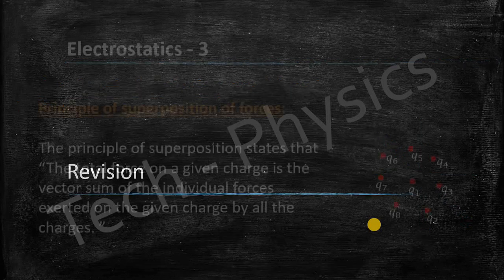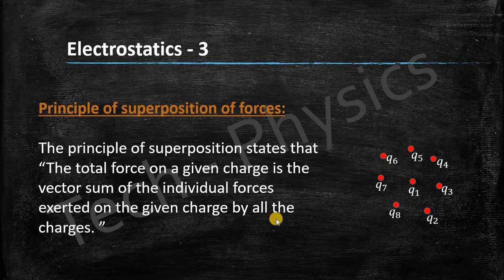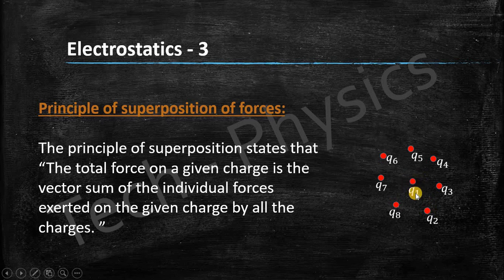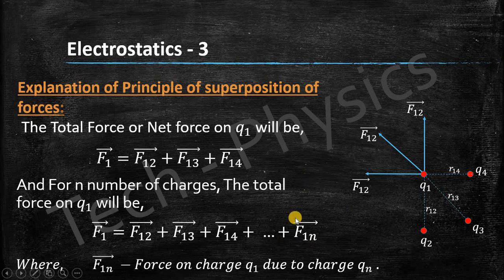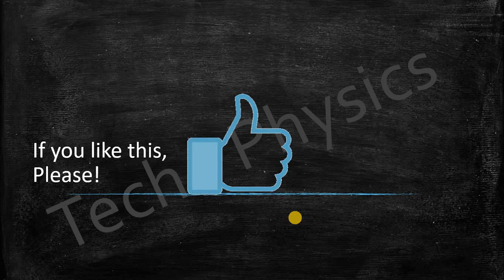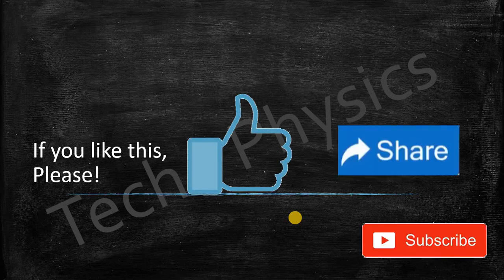To revise: the principle of superposition of forces states that the total force on a given charge is the vector sum of individual forces exerted on it by all other charges. For three charges acting on q1, the total force is F12 + F13 + F14. For n charges, we add up to F1n — the force due to the nth charge on q1. If you like this, please like, share, and subscribe to my channel. Thank you.